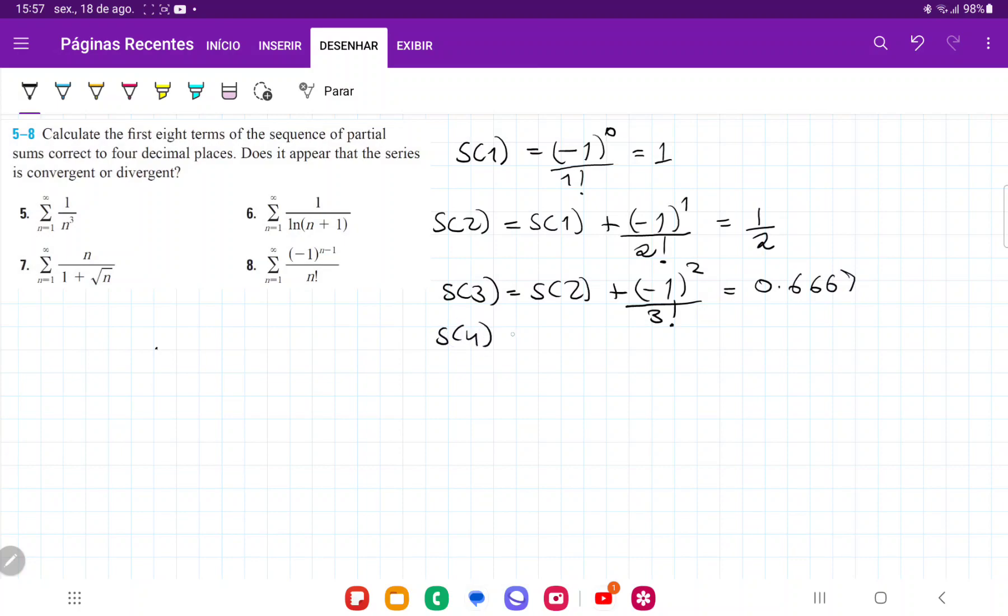For S(4), we have the previous sum plus (-1) to the power of 3 over 4 factorial. For S(5), we have the previous sum plus (-1) to the power of 4 over 5 factorial, which gives us 0.6333.